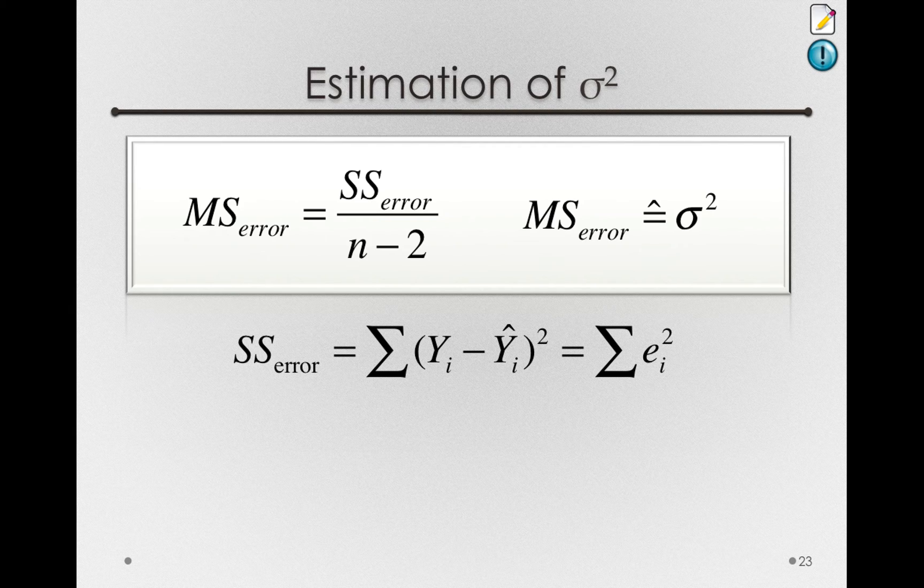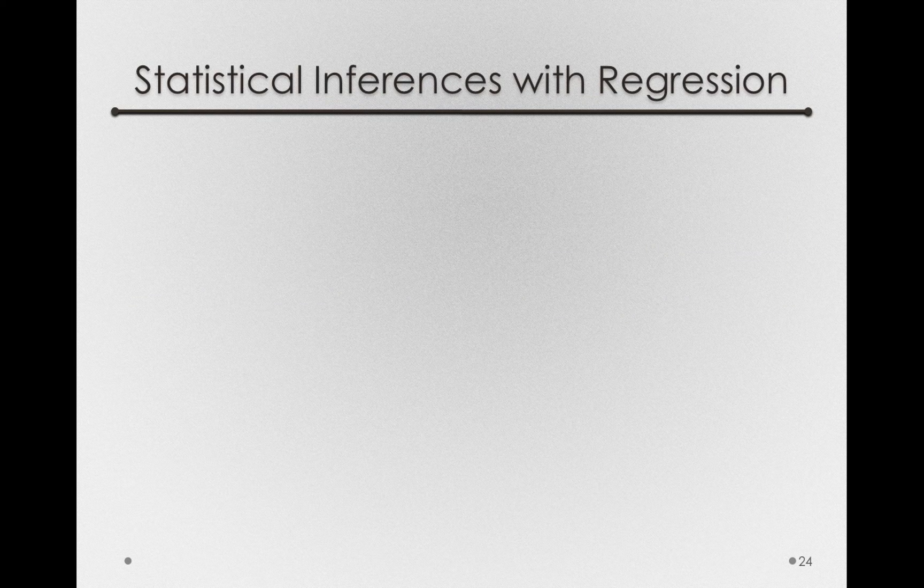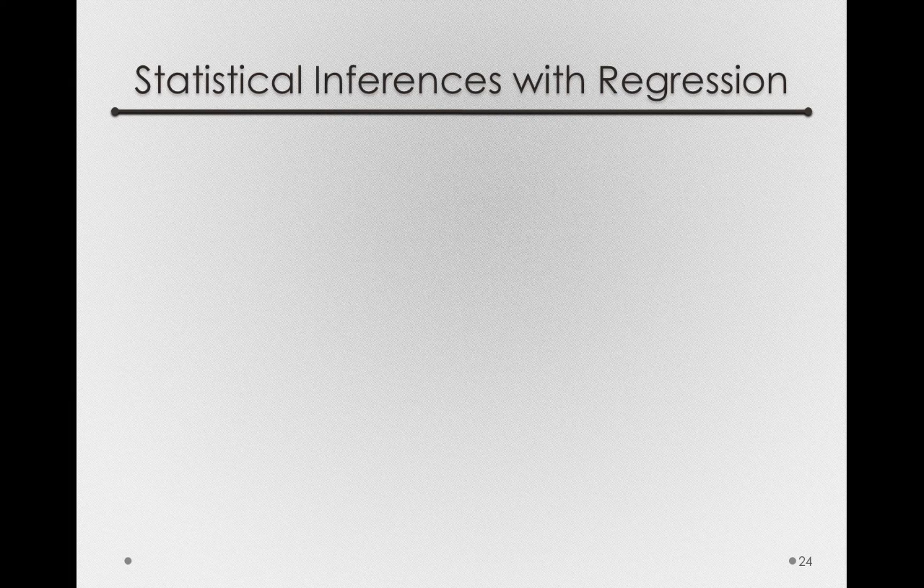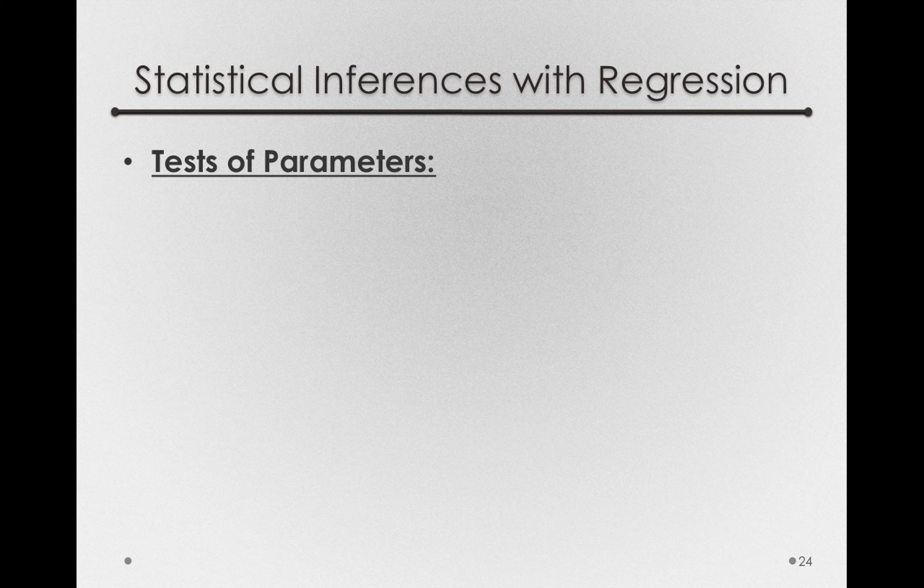Now that we have a way of estimating error in the population, we can perform hypothesis tests on the pieces of our model. Specifically, in regression there are several different types of inferences we might be interested in making. The first, and probably most important, are the tests of our model parameters.